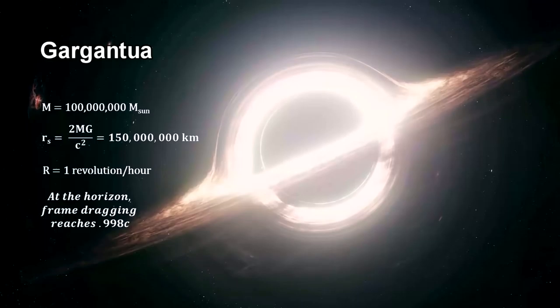At 100 million solar masses, the Schwarzschild radius is around the distance from the Sun to the Earth. That's far enough away to make the tidal forces at the horizon quite unnoticeable. We'll use Gargantua to illustrate the properties of general relativity that we have discussed in this segment.